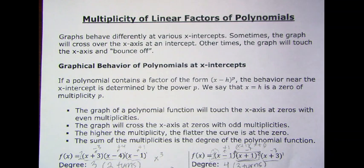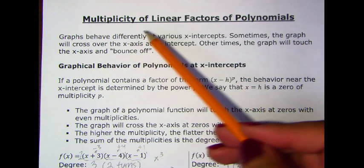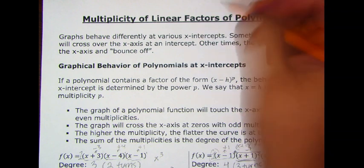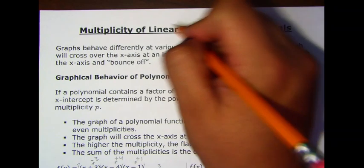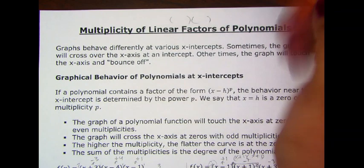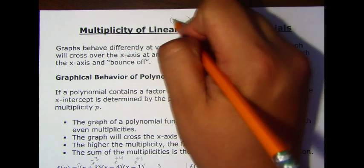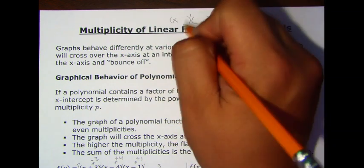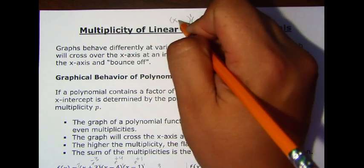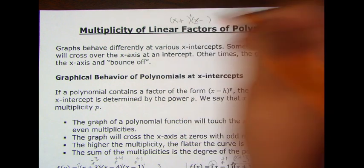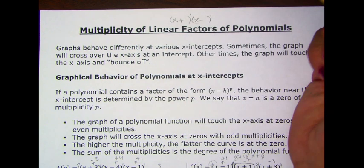In this video, I'm going to talk about the multiplicity of linear factors of polynomials. Linear factors are factors that you multiply to get a polynomial, but they look like linear, meaning they only have x to the power of 1. Most of them simply look like x plus something or x minus something, but they all have an exponent of 1.